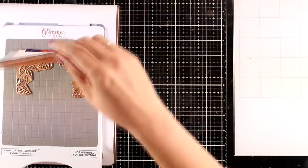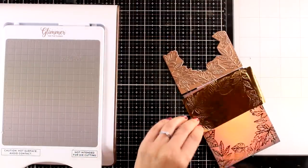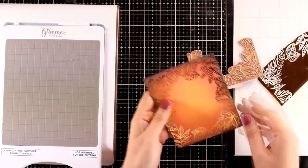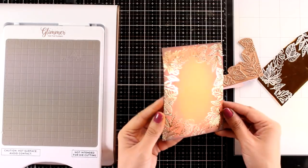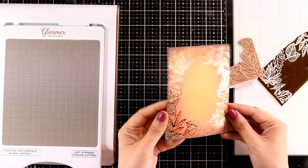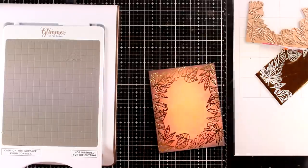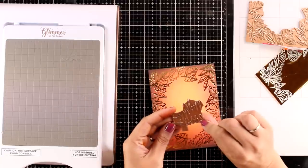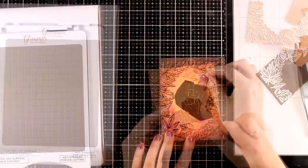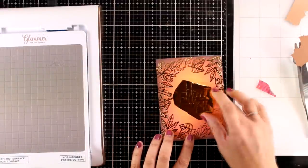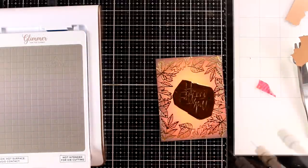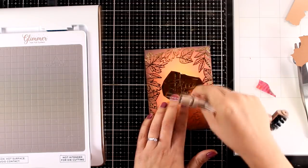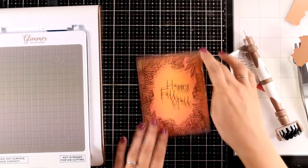If you like to play with distress oxide inks or any other inks to create backgrounds then I believe that this border is the perfect one for creating quick and simple cards. At the same time they do add lots of interest on your background with that shine. Then you have to do is just add a sentiment at the center. For this card I'm going with Happy Fall You All which again I'm going to foil with the same foil roll. You can stick this panel on top of a pre-folded card and you will be ready to go.